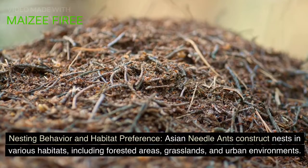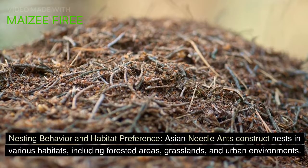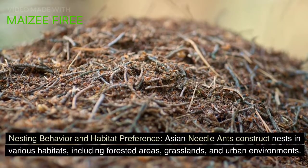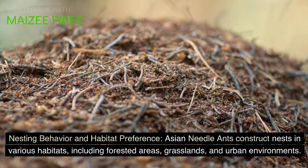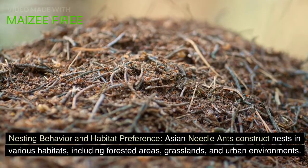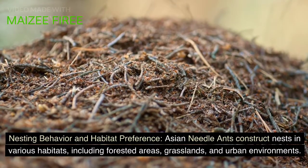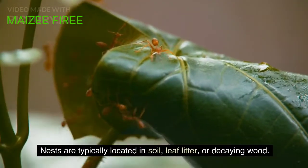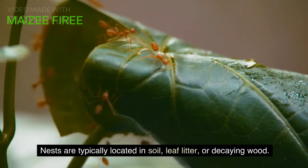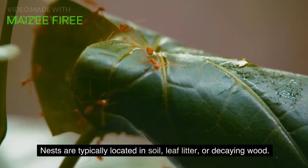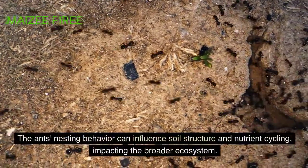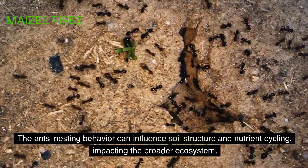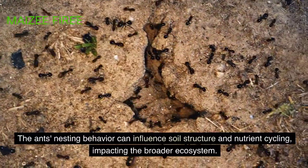Asian Needle Ants construct nests in various habitats, including forested areas, grasslands, and urban environments. Nests are typically located in soil, leaf litter, or decaying wood. The ants' nesting behavior can influence soil structure and nutrient cycling, impacting the broader ecosystem.